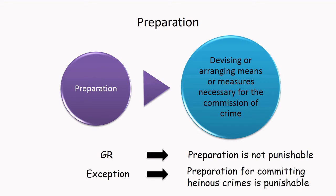After having mentally determined what is to be done, we move on to the second stage of crime commission which is Preparation. Preparation is nothing but devising or arranging means or measures necessary for the commission of crime. Here we buy things, we procure things, we collect things, we find some way out in order to effectuate the intended crime. Generally, this stage again is not punishable, but here again there are certain exceptions.